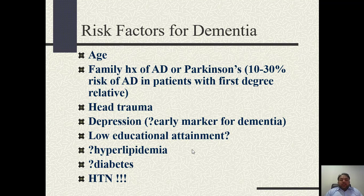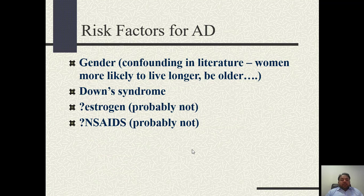What are the risk factors for dementia? Old age is an obvious risk factor. Family history of Alzheimer's disease or Parkinson's disease is also a risk factor. About 30% of dementia cases are genetic in nature. Head trauma predisposes a person to dementia. Other risk factors include depression, low educational attainment, hyperlipidemia, diabetes, hypertension, female sex, and Down syndrome. Estrogen use and NSAIDs have shown increased risk in some studies but are not yet confirmed.